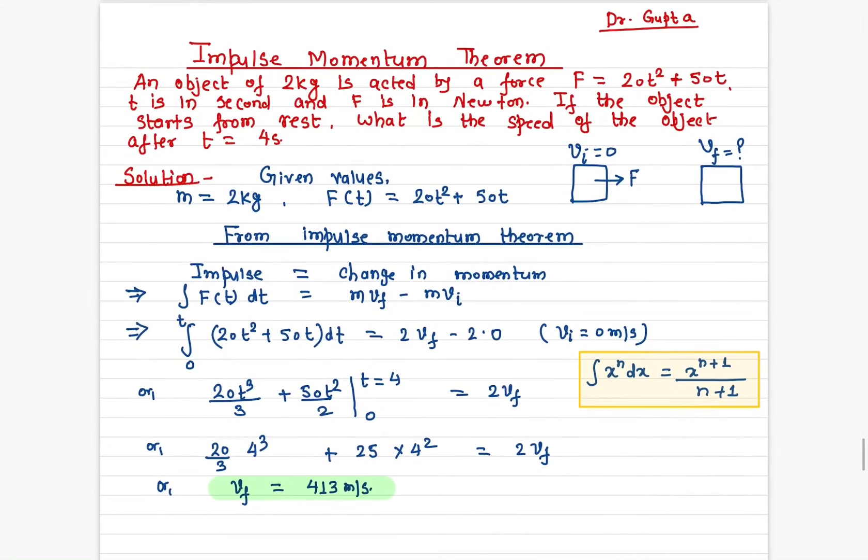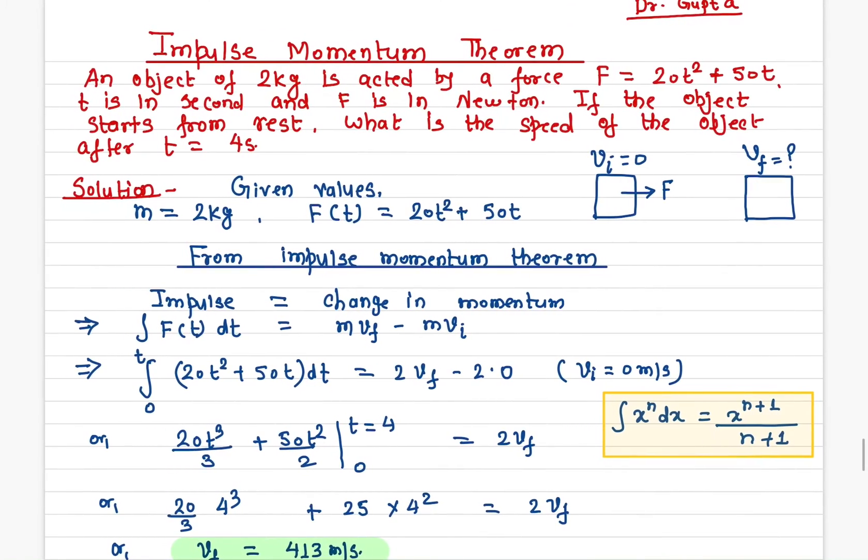So we now, by using the impulse momentum theorem, found out what is the speed of the particle when a varying force—the time-dependent force—acts onto it. This is it from this impulse momentum theorem. And again, don't forget to like, share, and subscribe.